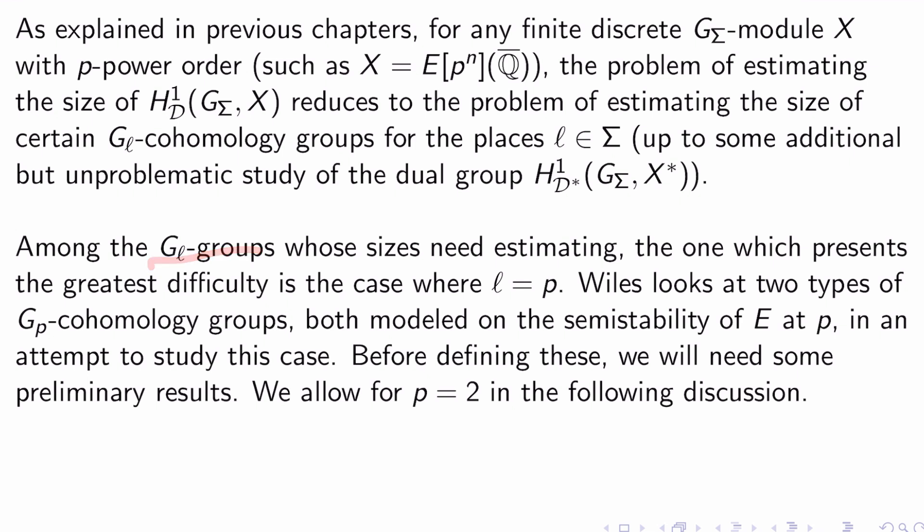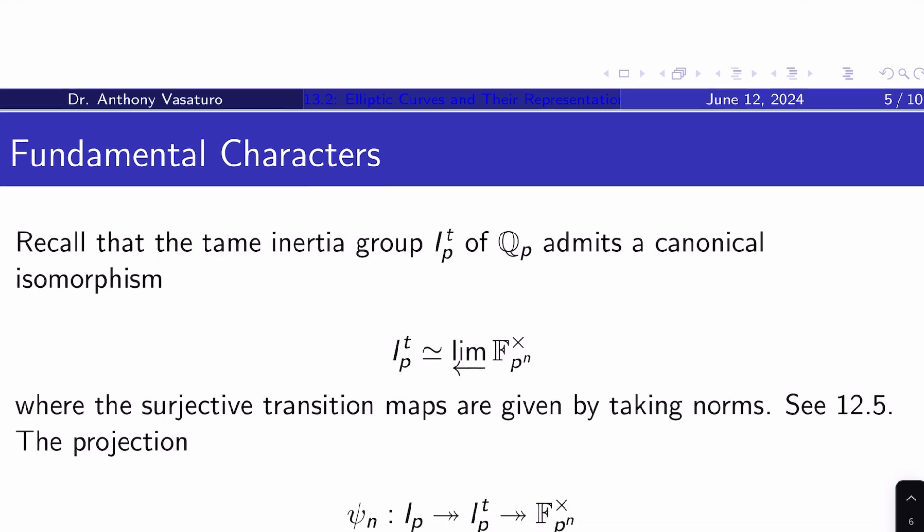Among the G_L groups whose sizes need estimating, the one which presents the greatest difficulty is when L actually equals P. Wiles looks at two types of G_P cohomology groups, both modeled on the semi-stability of E at P, in an attempt to study this case. Before defining these, or I guess recalling these, we will need some preliminary results, and we will allow for P equals two in the following discussion.